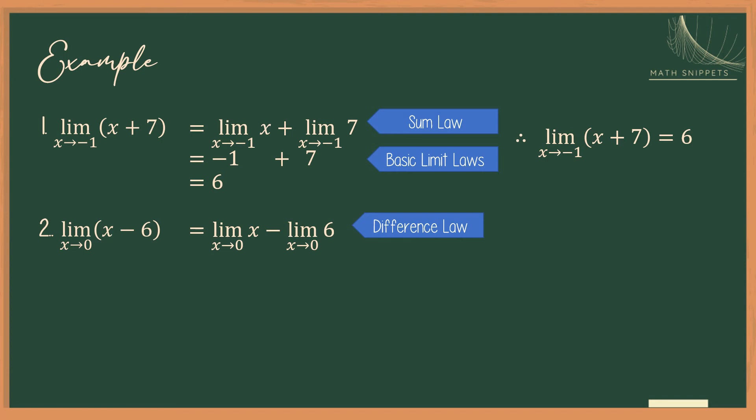So we get the limit of x as x approaches 0 is 0, and the limit of 6 as x approaches 0 is 6 from the basic limit laws. So simplify this, we get 0 minus 6 equals negative 6. Therefore, the limit of x minus 6 as x approaches 0 is negative 6.